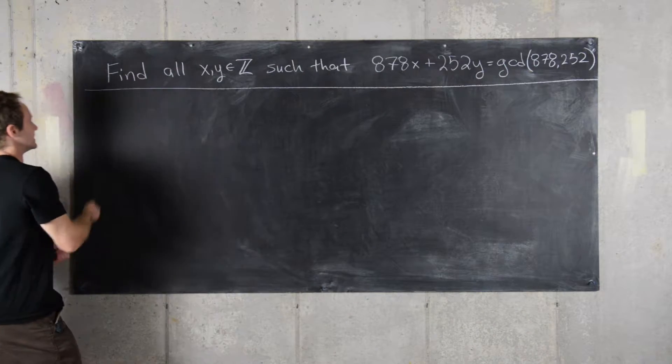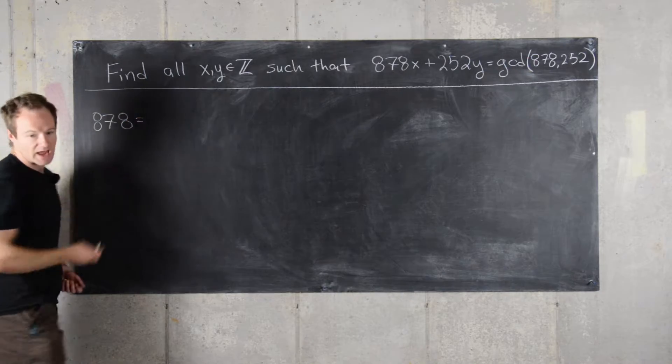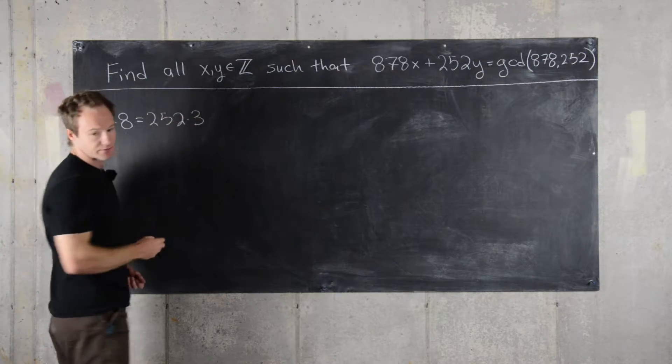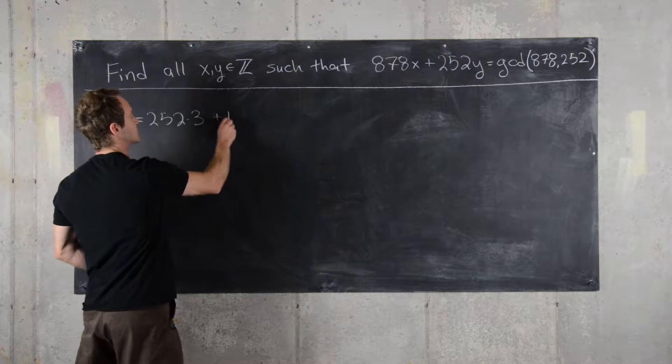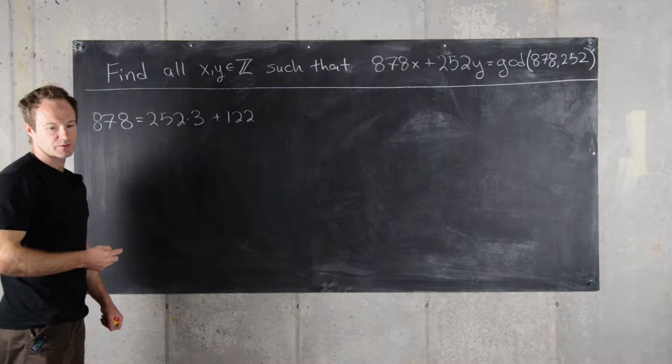Starting with the Euclidean algorithm, we can write 878 as 252 times 3 plus 122, with quotient 3 and remainder 122.